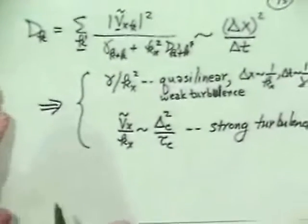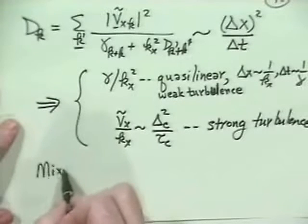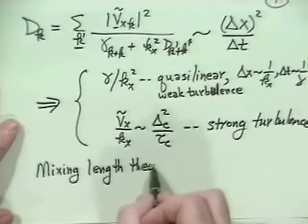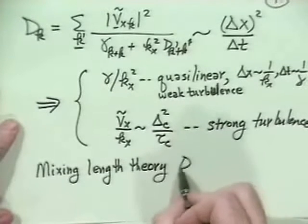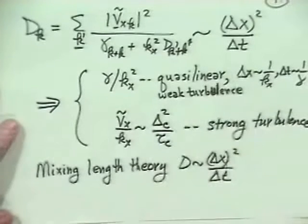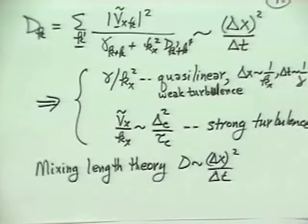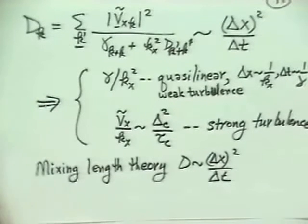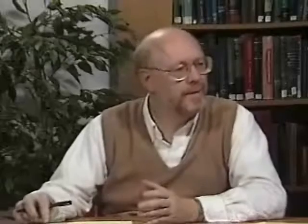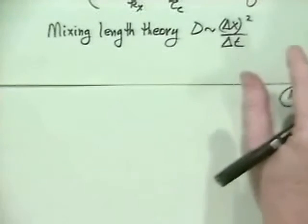And sometimes people do one other thing. They do something called mixing length theory. And in that, what you do is you say that just that the diffusion coefficient is delta x squared over delta t, and then you use one of the two of these or something else if you choose to do so. There are just various things you can do.